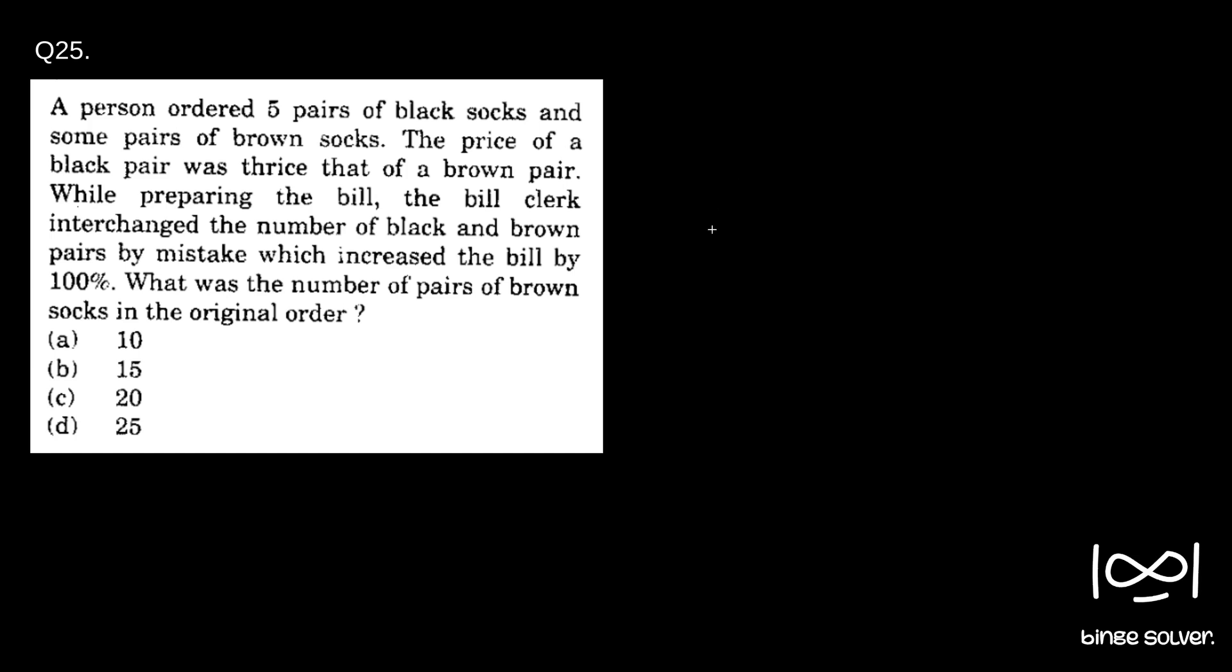The price of a black pair was twice that of a brown pair. So if you say price of black be x and price of brown be y, it is given the price of a black pair was twice that of a brown pair, so x is equal to 3y.